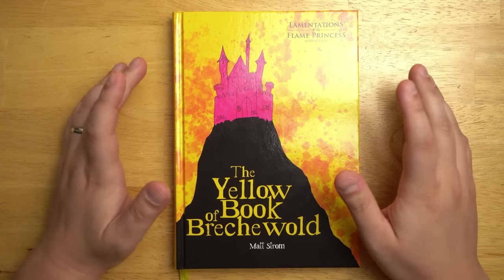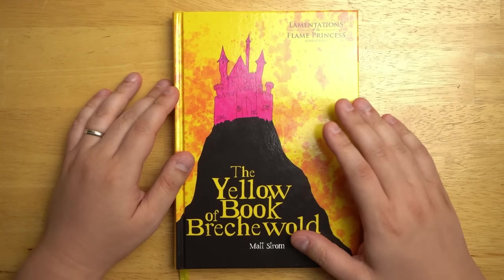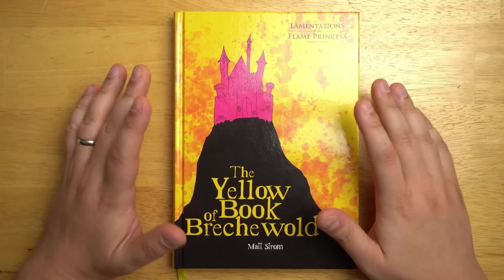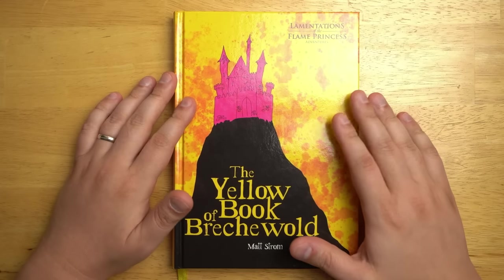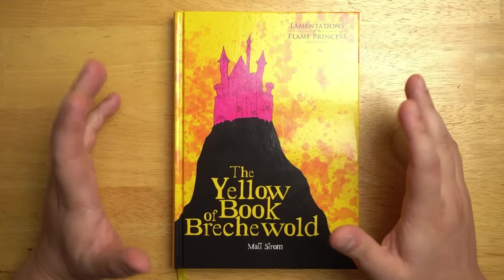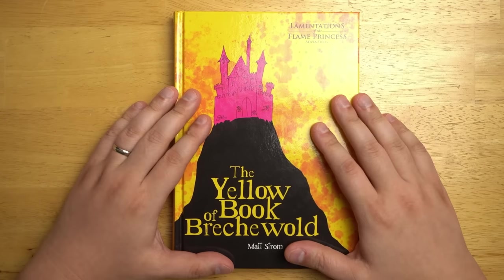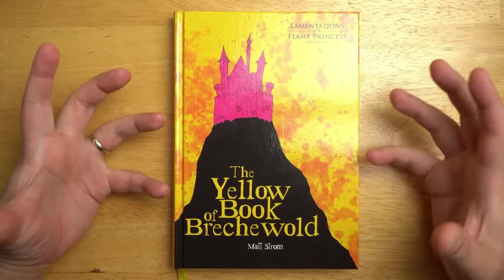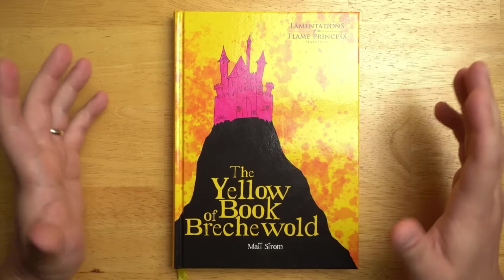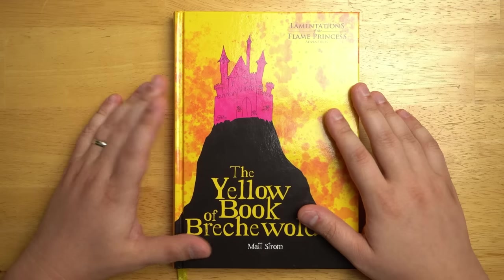Welcome back to Questing Beast, I'm Ben. Today we're taking a look at the Yellow Book of Breckwald by Matt Strom. I've been following the development of this for some time. I saw that Matt Strom was working on it on his blog, Ice and Ruin, some years ago, but then it went quiet for a long time and I was very surprised to see it emerge, fully formed, at Gen Con at the Lamentations booth where it's been published.